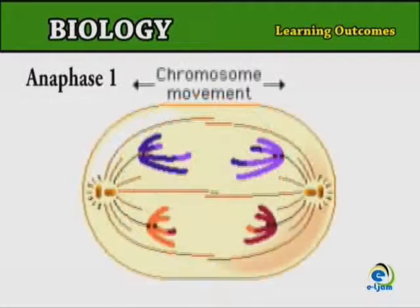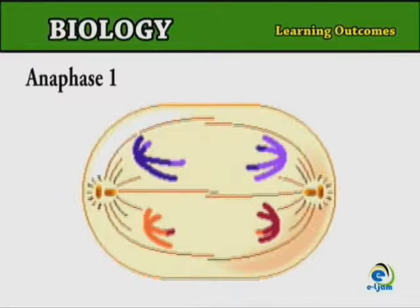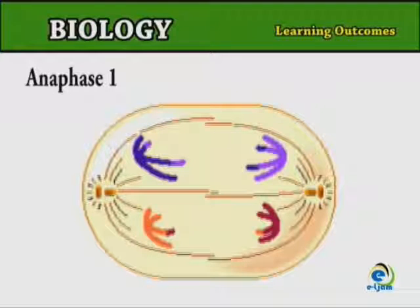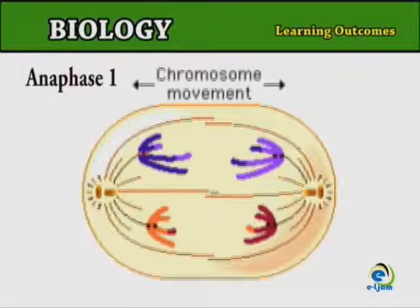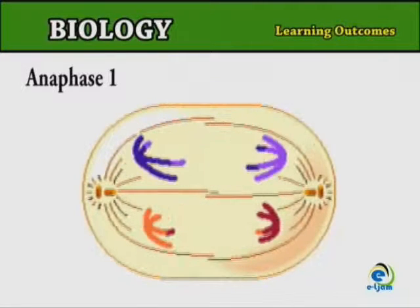Anaphase I: Homologous chromosomes, each made up of a pair of chromatids joined at the centromere, move towards opposite poles of the spindle. The sister chromatids also separate slightly from one another along their length, except at the centromere.